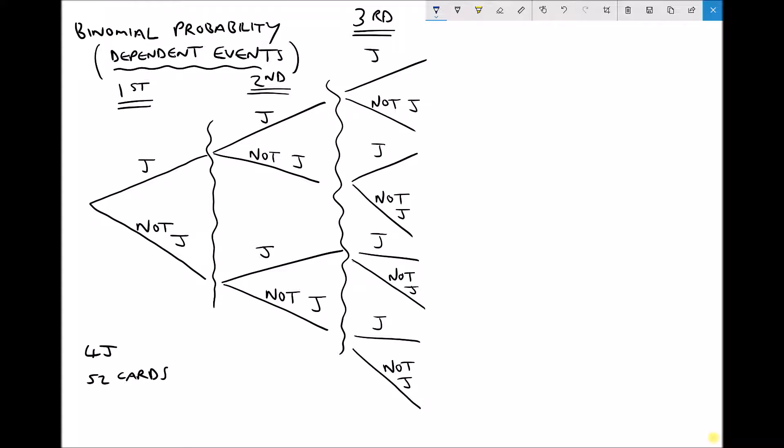Okay, so when you're first presented with a pack of cards and you take one card at random, there's four jacks and there's 52 cards. So the probability of drawing a jack on that first card is 4 out of 52. And because we know our probabilities have to add up to one, the chance of getting a not jack or anything other than a jack must be 48 out of 52.